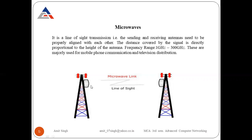Microwaves are used in mobile phone communications. You may have noticed that in mountain areas, signal strength is very low because there are fewer antennas or towers, whereas in cities signal strength is high due to a larger number of antennas. Looking at the diagram, these are the towers you see in cities — they send signals from tower to tower, and those signals are also received by users on their cell phones. This covers microwaves.